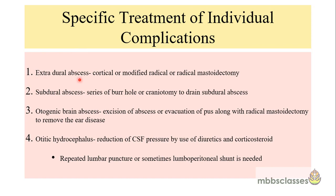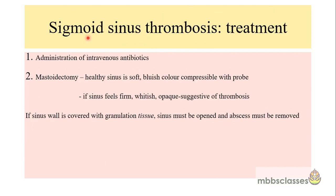For specific treatment of intracranial complications: extradural abscess is most often encountered during mastoidectomy, so treatment is cortical, modified radical, or radical mastoidectomy. Subdural abscess is a neurosurgical emergency requiring a series of burr holes or craniotomy to drain the abscess. Otogenic brain abscesses need excision or evacuation of pus depending on the surgeon's preference, along with radical mastoidectomy to remove the primary ear disease. To treat ototic hydrocephalus, medications like diuretics and corticosteroids are used first; if needed, repeated lumbar puncture or lumboperitoneal shunt may be required to control intracranial hypertension.